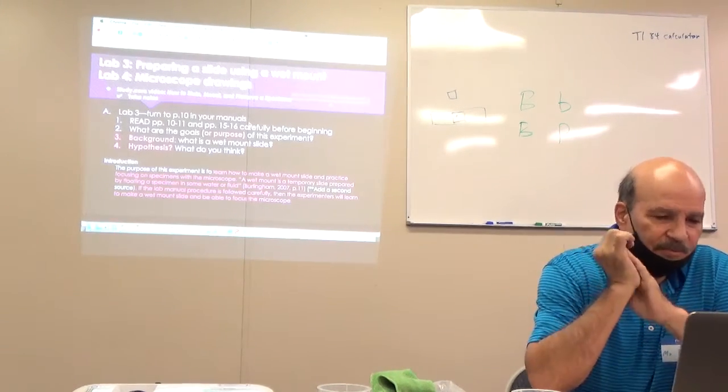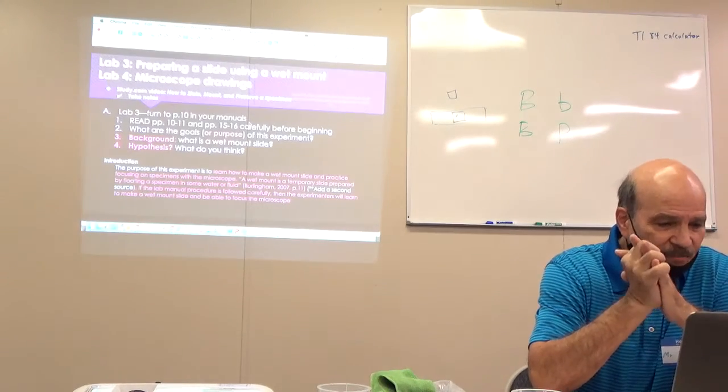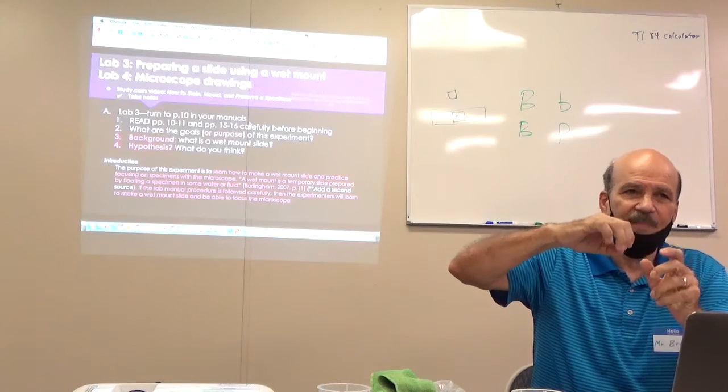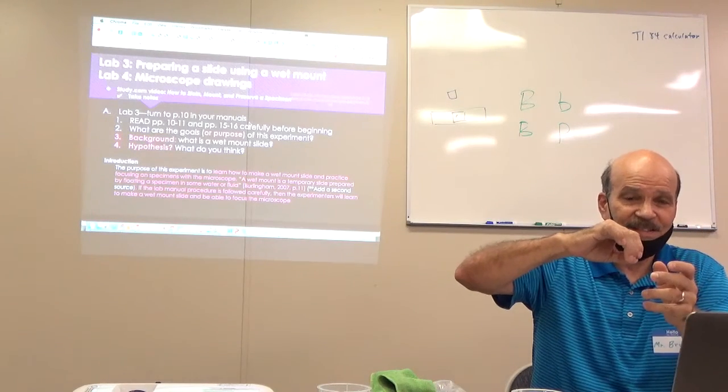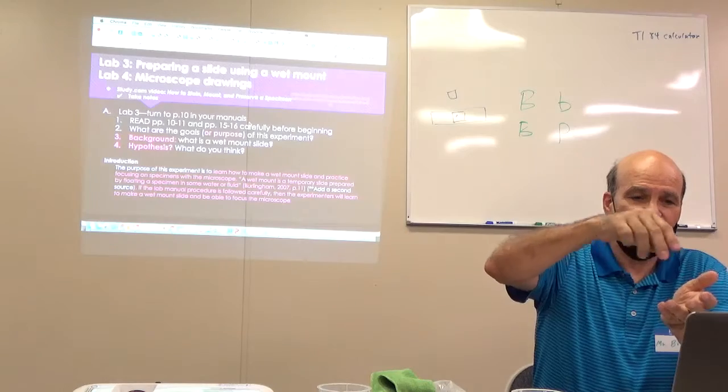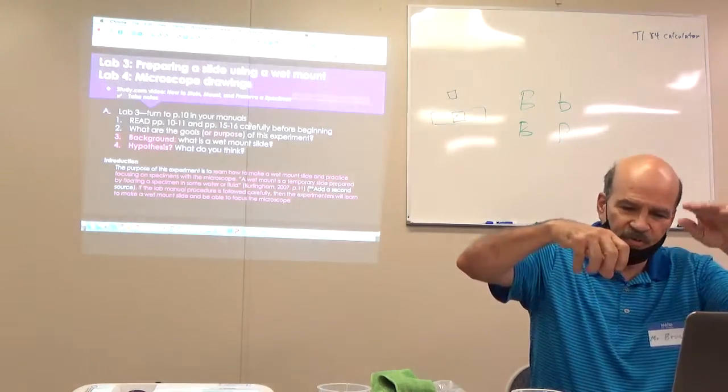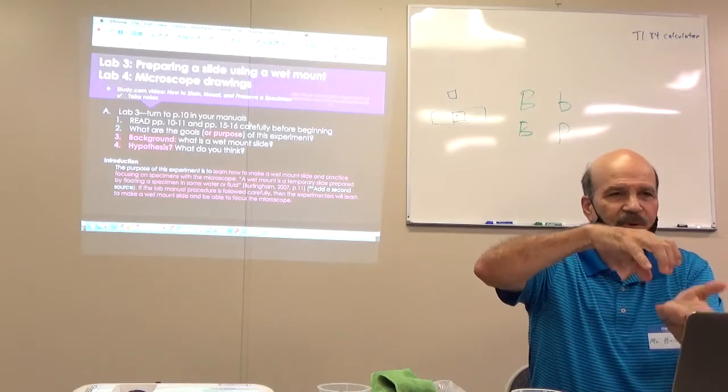So, under introduction, it says the purpose of the experiment is to learn how to make a wet mount slide and practice focusing on specimens with a microscope. Remember when you bring it down to higher magnification? Guess what happens if you slide it over and it's too tight? It hits the, you just mess your slide all up, right? So make sure you've got it all the way down. Then you bring it back in.